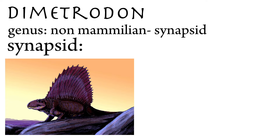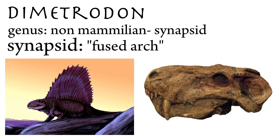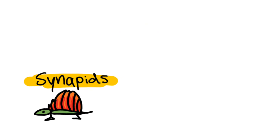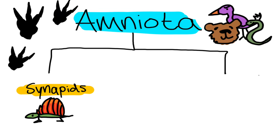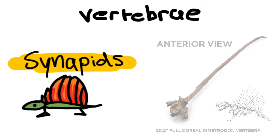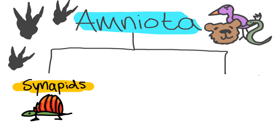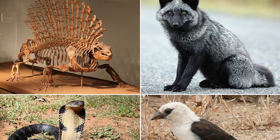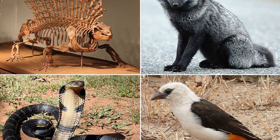Synapsid means 'fused arc,' and this name refers to their skull. The synapsids are one of the two major clades of vertebrate animals in the group Amniota. Vertebrate meaning they have a backbone, and Amniota literally refers to all terrestrial beings with a backbone.